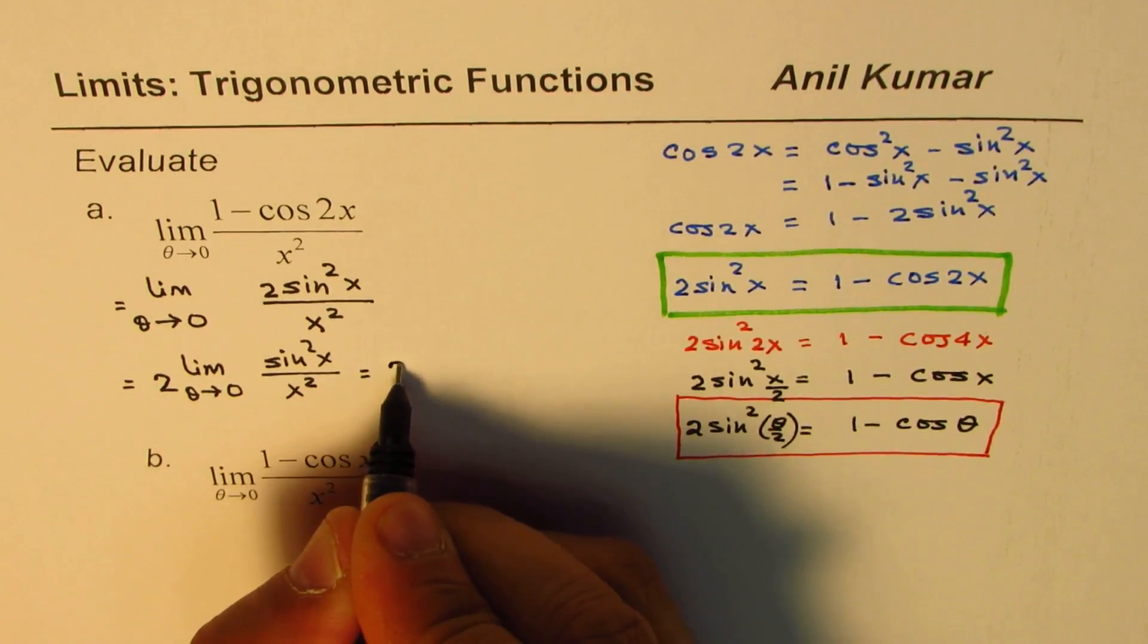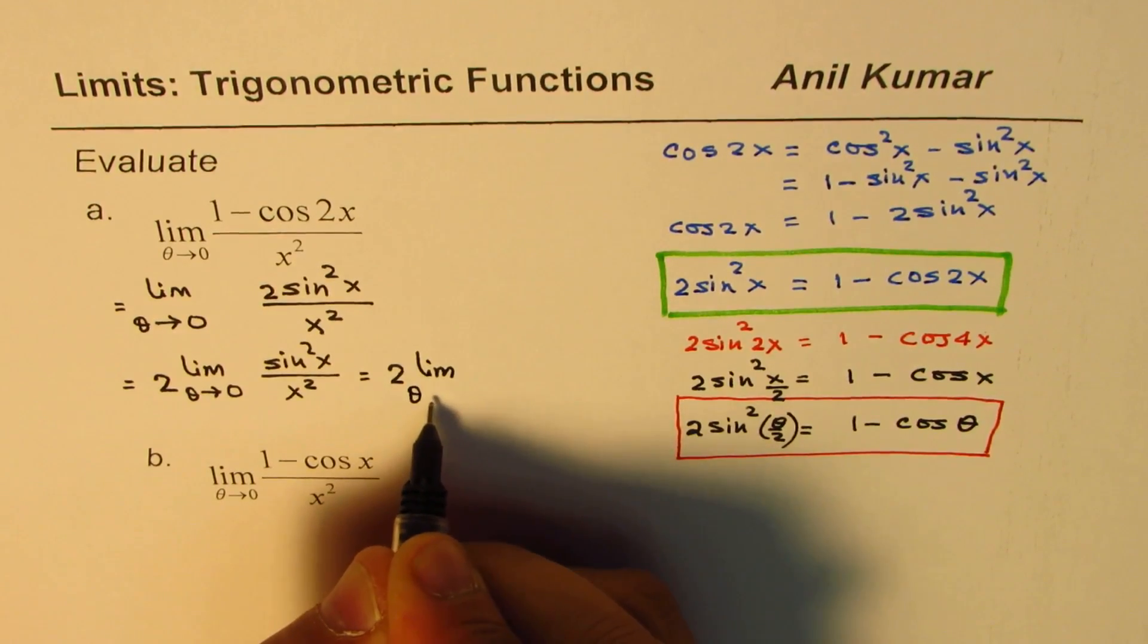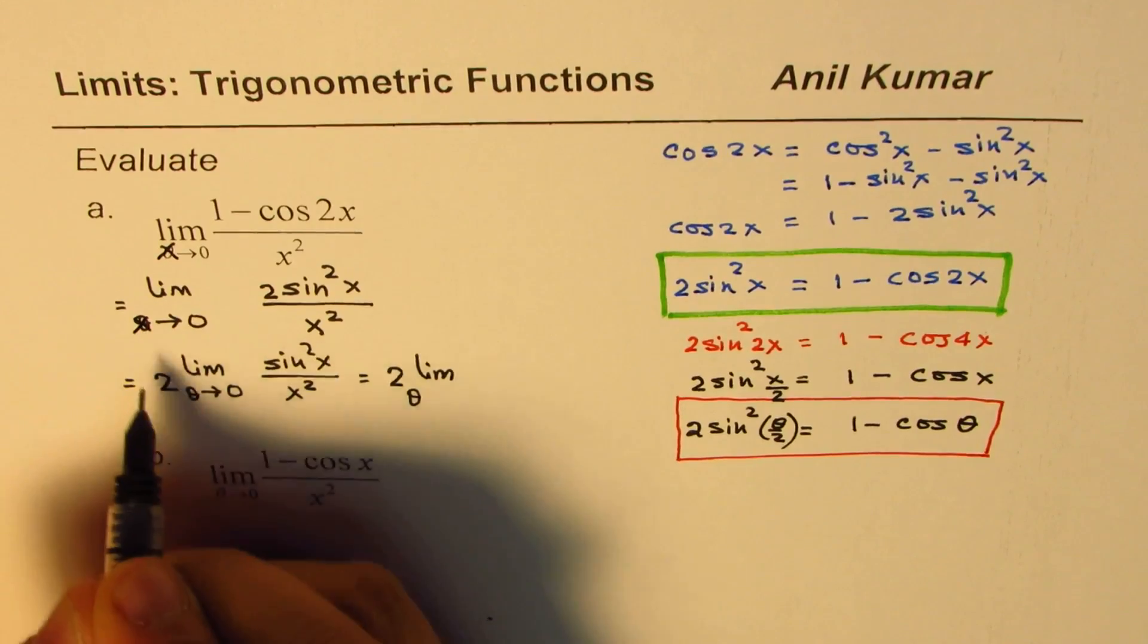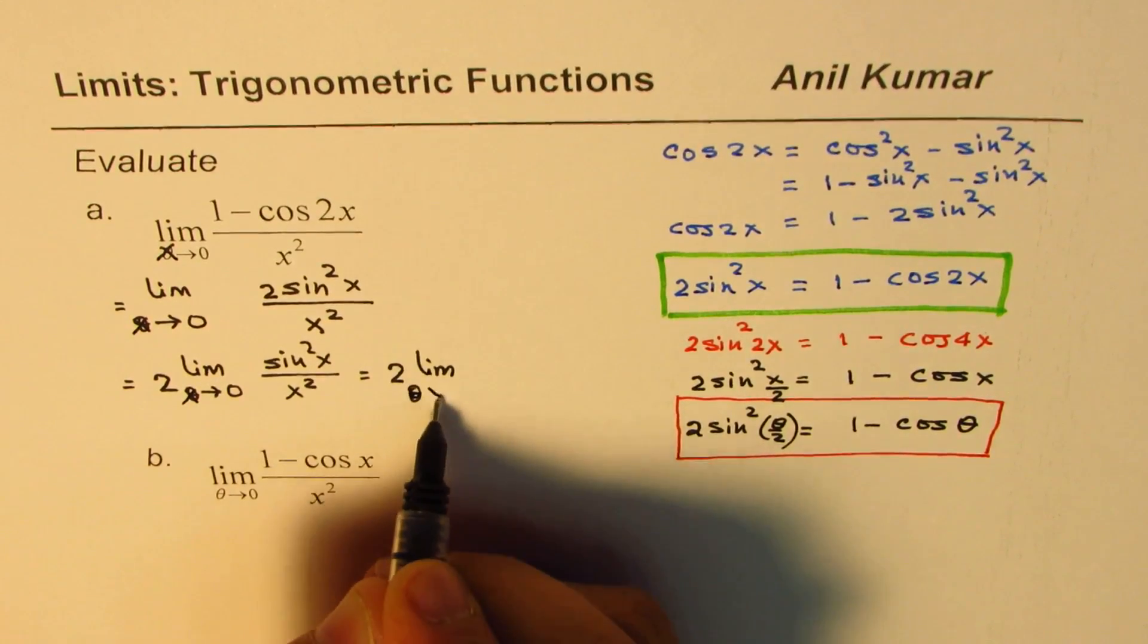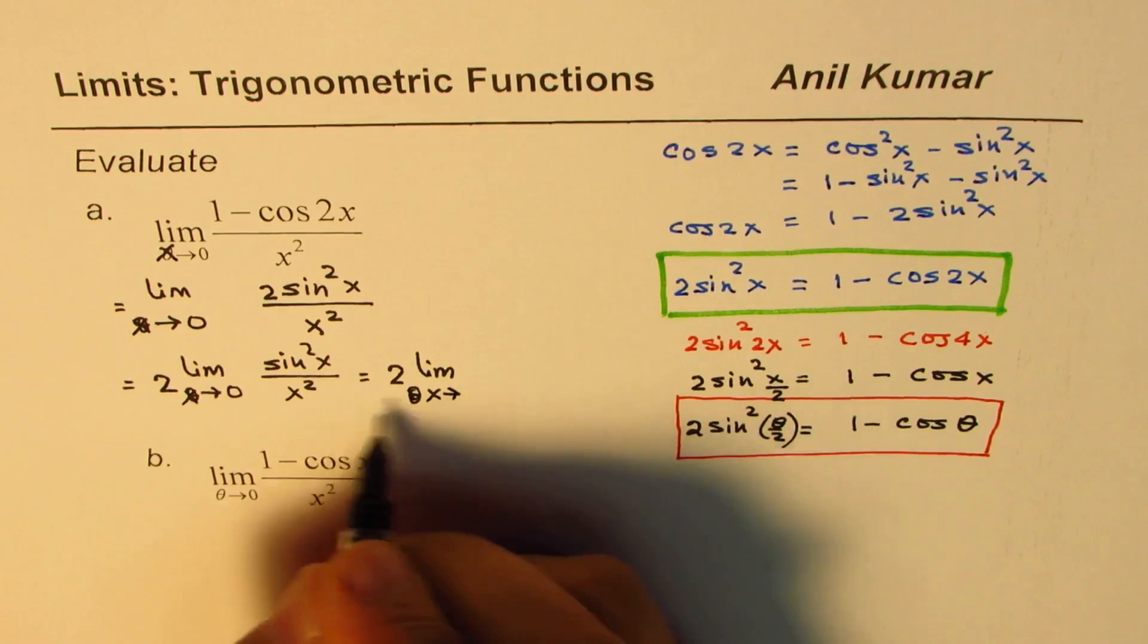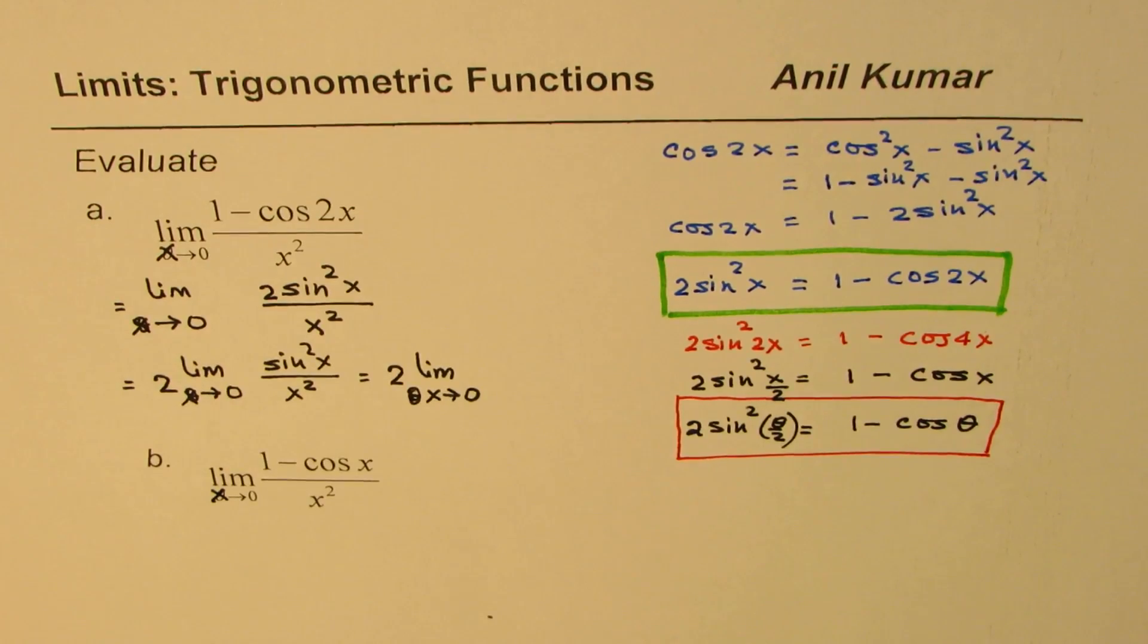It should not be difficult. We could take this as sin x over x. So I could write this as 2 times limit... this should be x, not theta. So x approaches 0.